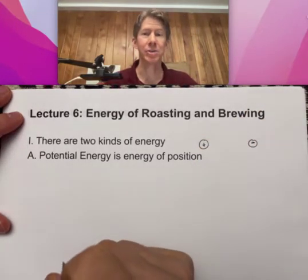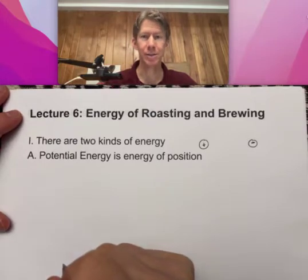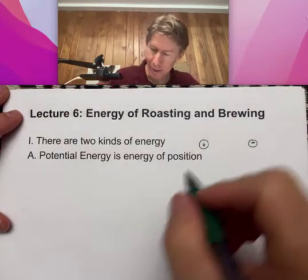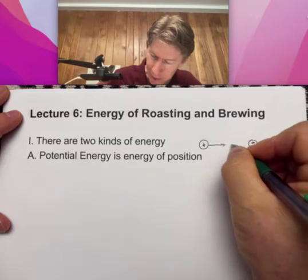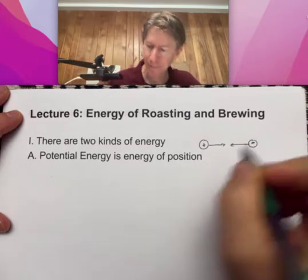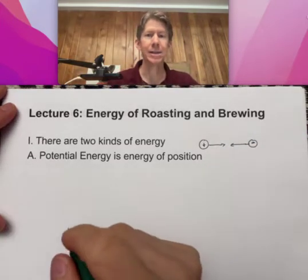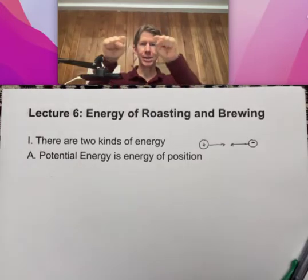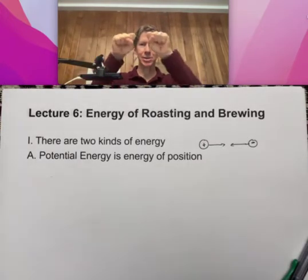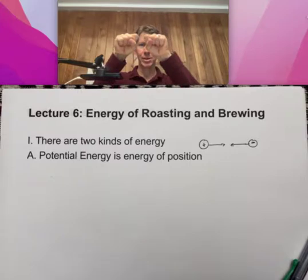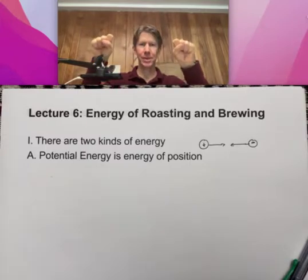We know that there's an attraction between oppositely charged items, and that attraction depends upon each of the items' exact positions. So here they have a different potential energy than here. That's potential energy - energy of position.